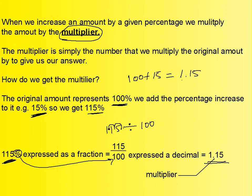So the multiplier is the number by which we multiply our original value to get the correct answer. It's always made out of 100%, which is the original value, plus whatever the percentage you're increasing it, expressed as a decimal, and that's what we're going to multiply by. Whether you understand it or not is found out by being able to answer these questions — have a go at them and let's see how you do.